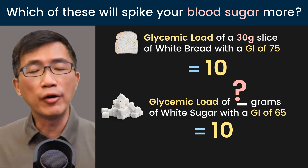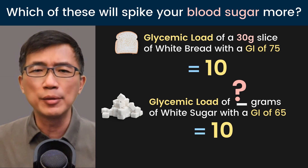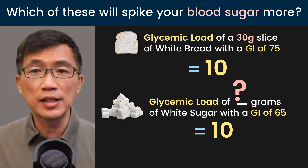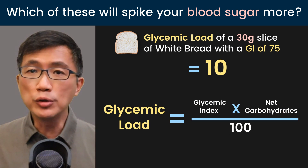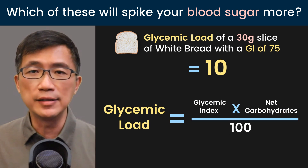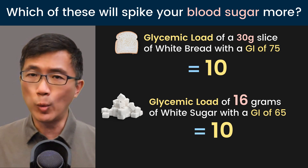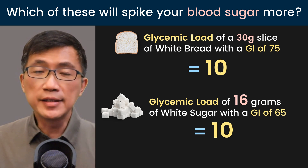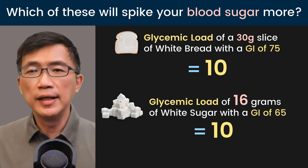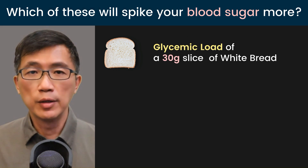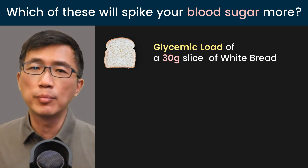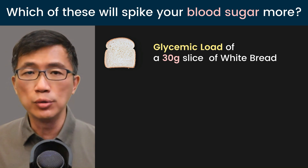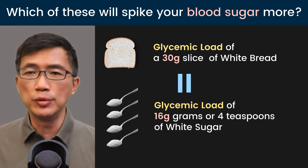Next, we can calculate how many grams of white sugar would also give a glycemic load of about 10 — equivalent to that 30-gram slice of white bread. Using the same GL formula, we find that 16 grams of white sugar gives a glycemic load of about 10. That 16 grams of white sugar is approximately four teaspoons.